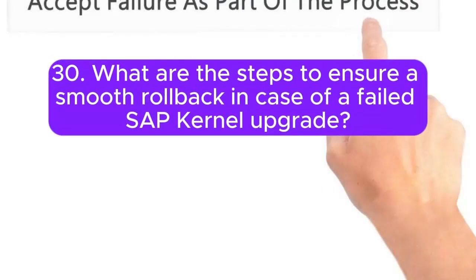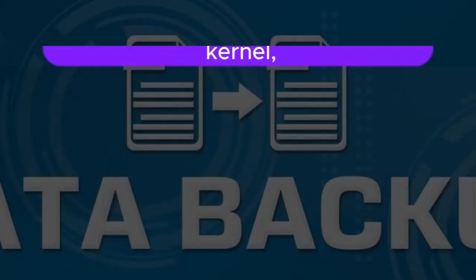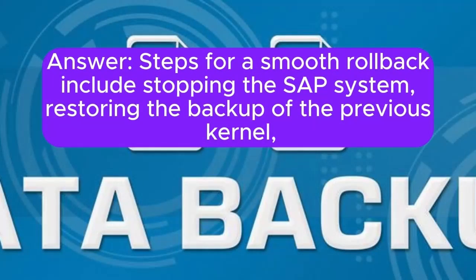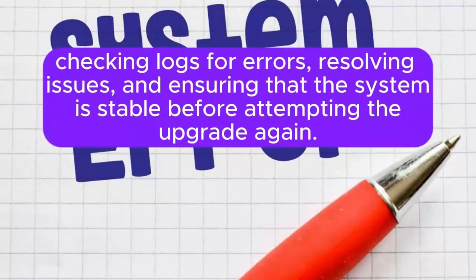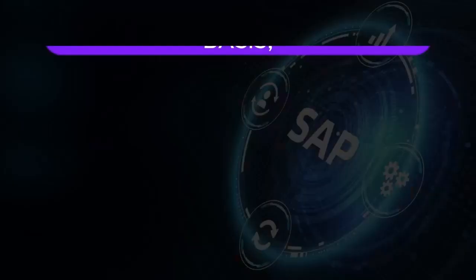30. What are the steps to ensure a smooth rollback in case of a failed SAP kernel upgrade? Steps for a smooth rollback include stopping the SAP system, restoring the backup of the previous kernel, checking logs for errors, resolving issues, and ensuring that the system is stable before attempting the upgrade again.